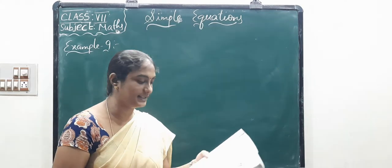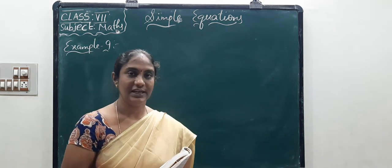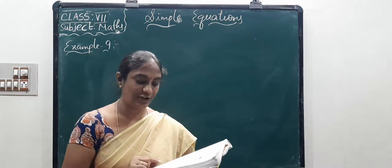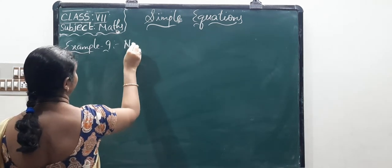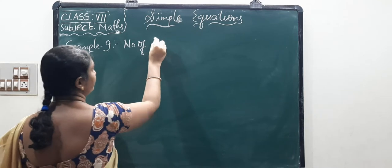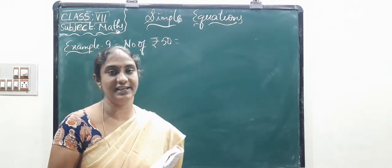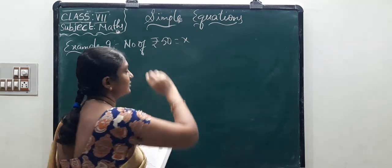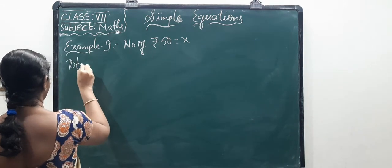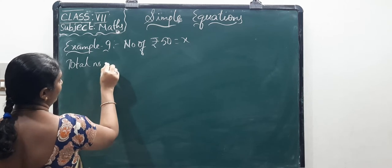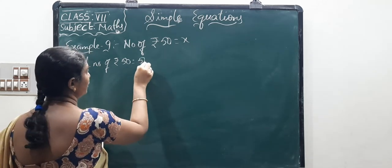Once again: a purse contains 250 rupees total, having 10-rupee notes and 50-rupee notes. They didn't give us how many notes there are, so I am taking a variable. Number of 50-rupee notes equals X. Total value of 50-rupee notes equals 50 into X.